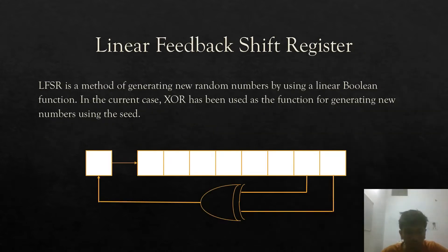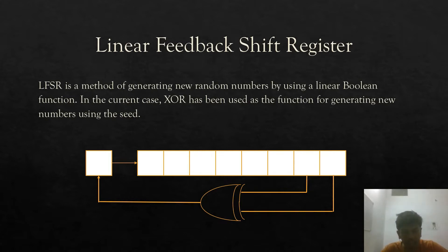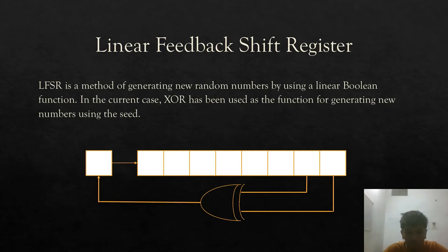There are multiple methods to generate pseudo-random numbers. One is the linear congruential generator: take a seed x, multiply by constant a, add constant b to get ax + b, then take the modulus with respect to some base m — the final result is the random number. Another method is the linear feedback shift register (LFSR), which is the method I have implemented in 8085.